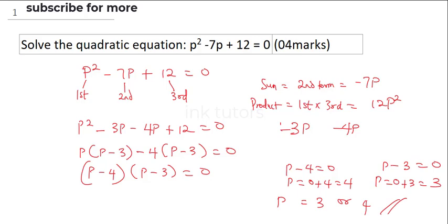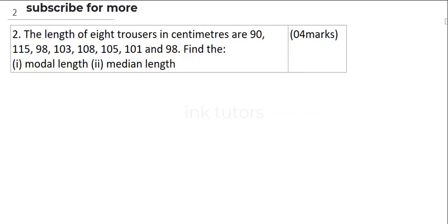So as easy as that, you can attempt that quadratic equation. Question 2 says, the length of 8 trousers in centimeters are 90, 115, 98, 103, 108, 105, 101 and 98. Find the modal length.